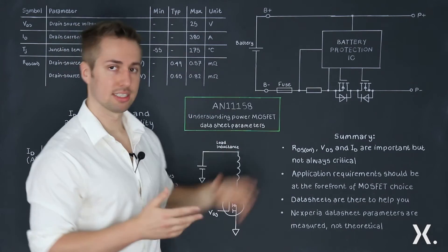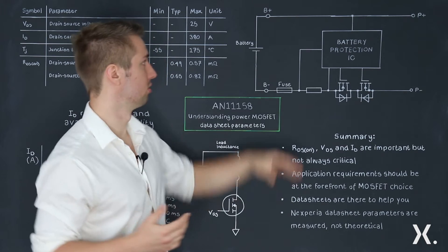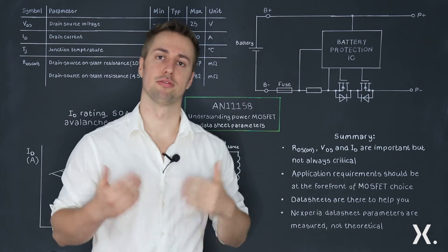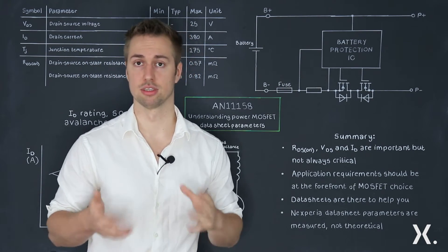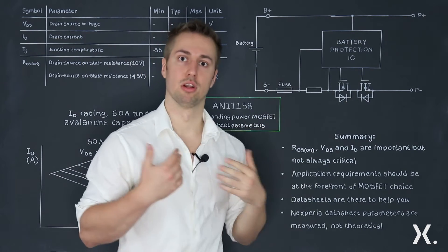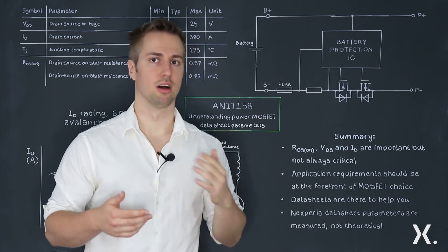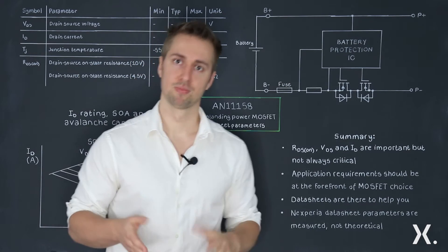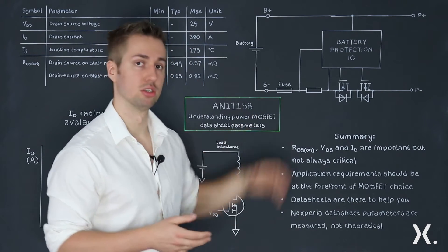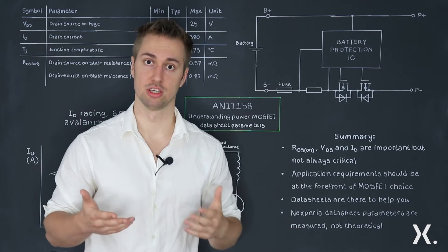Yes, drain source voltage becomes important, so for 36 volt we can get away with a 50 volt or 55 volt rated MOSFET. And when these MOSFETs are fully on, low RDS on and large drain current become important. However, in a fault condition, for example a short circuit situation, low RDS on or large ID rating won't help you anymore.